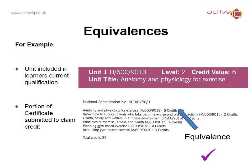Here you can see the equivalence example in an illustration. The first part is the unit included in the learner's current qualification — the one they are completing. As you can see, it shows unit 1 with the unit code, the level, the credit value and the unit title. The second image is the portion of the certificate that needs to be submitted to claim the credit for that unit. As you can see, the arrow is pointing clearly to the anatomy and physiology for exercise unit with the same code. Therefore, this equivalence can be accepted.